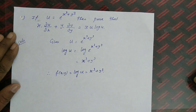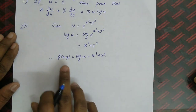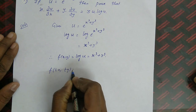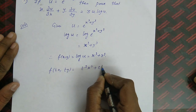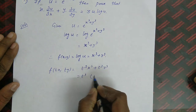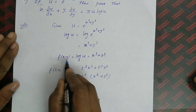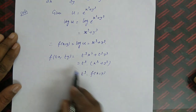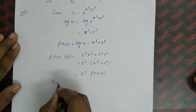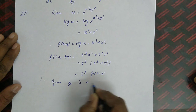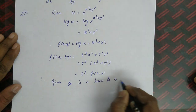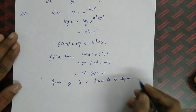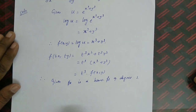To check the homogeneous property of f(x, y) = x³ + y³, replace x with tx and y with ty: f(tx, ty) = t³x³ + t³y³ = t³(x³ + y³) = t³ · f(x, y). So the function satisfies the homogeneous condition. Therefore the given function is a homogeneous function of degree 3.